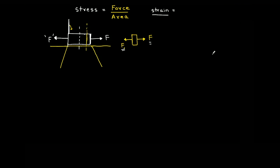It is just like how force is the cause and acceleration is the effect — similarly, stress is the cause and strain is the effect of that stress. We are trying to quantify the deformation of the solid. Since a solid can deform in different ways — length, volume, or shape — different kinds of deformation have different definitions of strain.